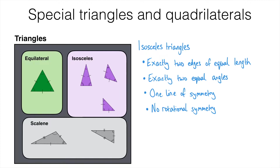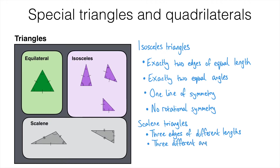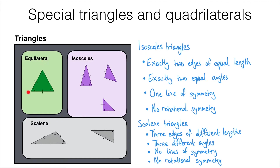Next we have scalene triangles. Scalene triangles have three sides of different length, three different angles, and no lines of symmetry and no rotational symmetry. The dashes on the diagram — a single dash, double dash and triple dash — show that the sides are all of different lengths. So we've now seen ways of classifying triangles by edge length: equilateral triangles have three equal edges, isosceles triangles have two equal edges, and if we have no equal edges we have scalene triangles.